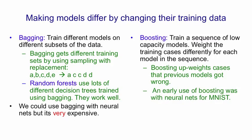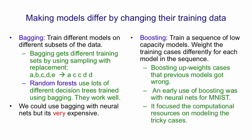An early use of boosting was with neural nets for MNIST, and there when computers were much slower one of the big advantages was that it focused the computational resources on modeling the tricky cases and didn't waste a lot of time going over easy cases again and again.